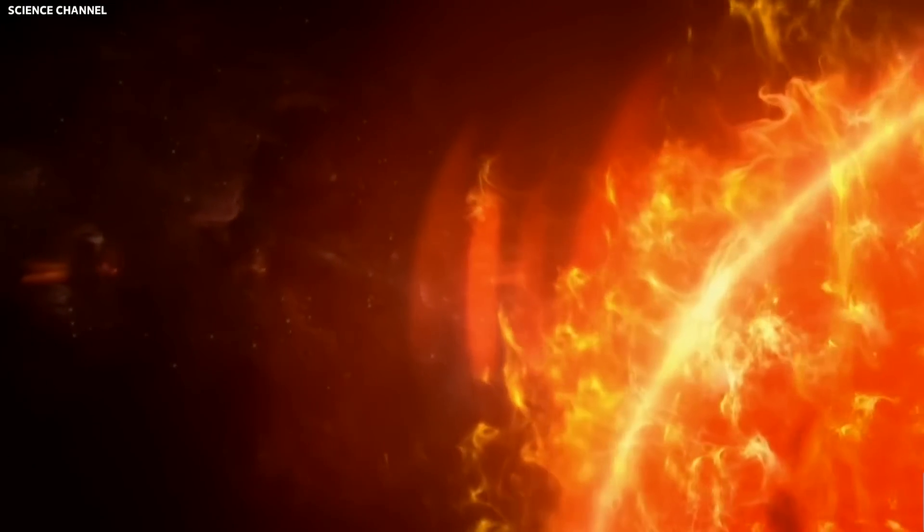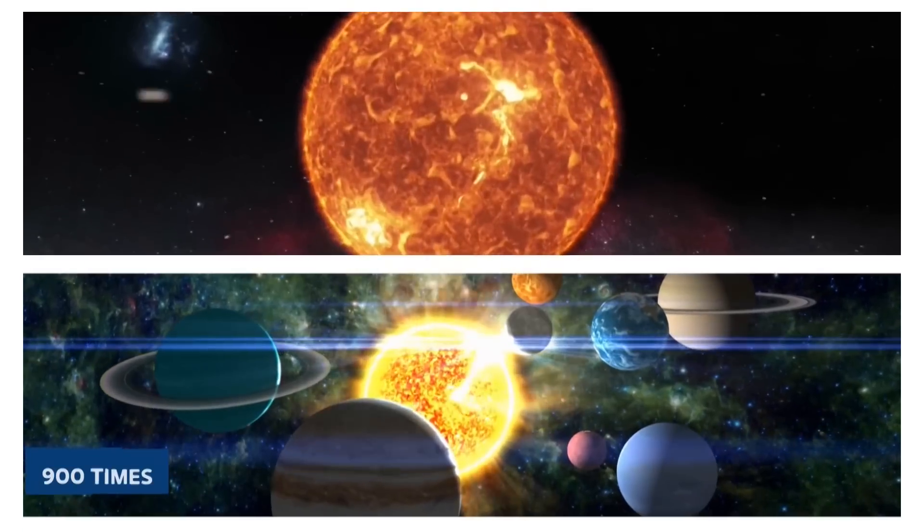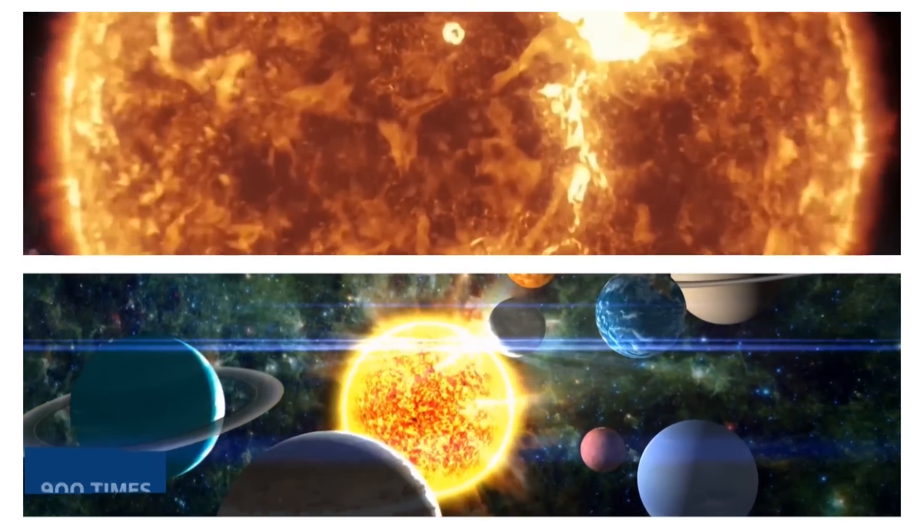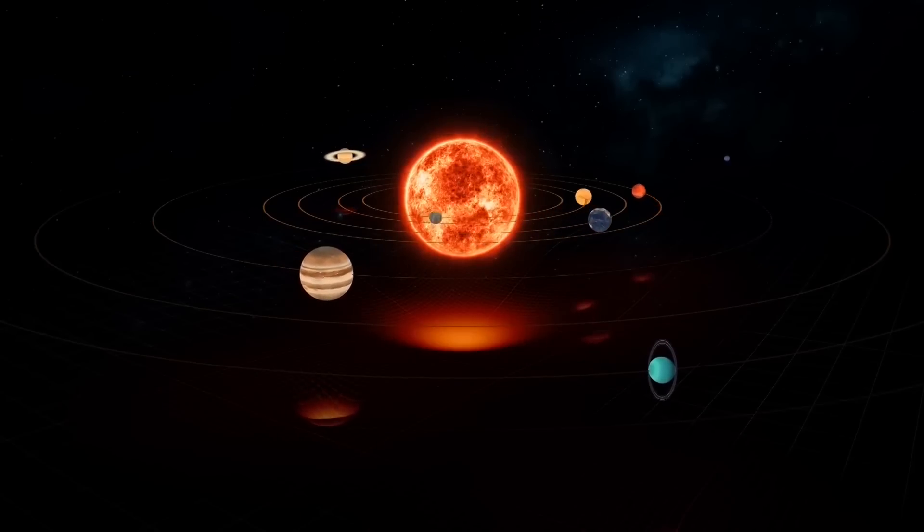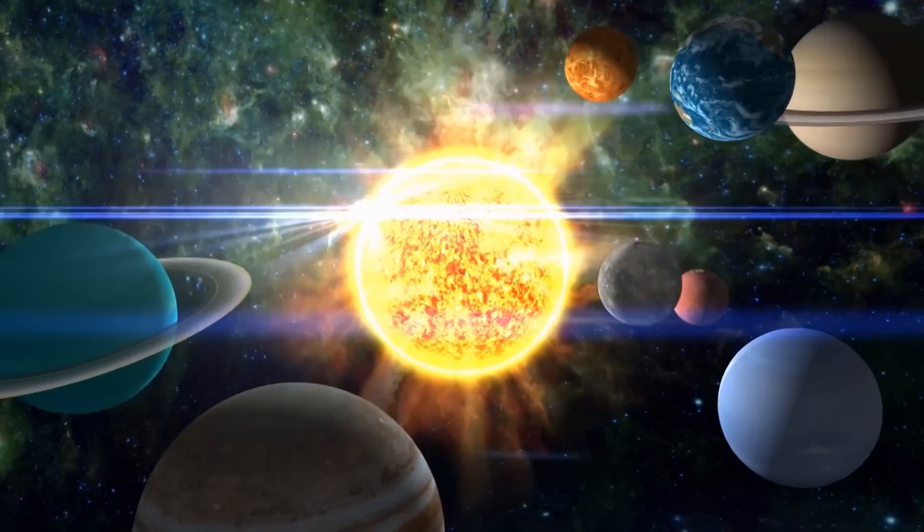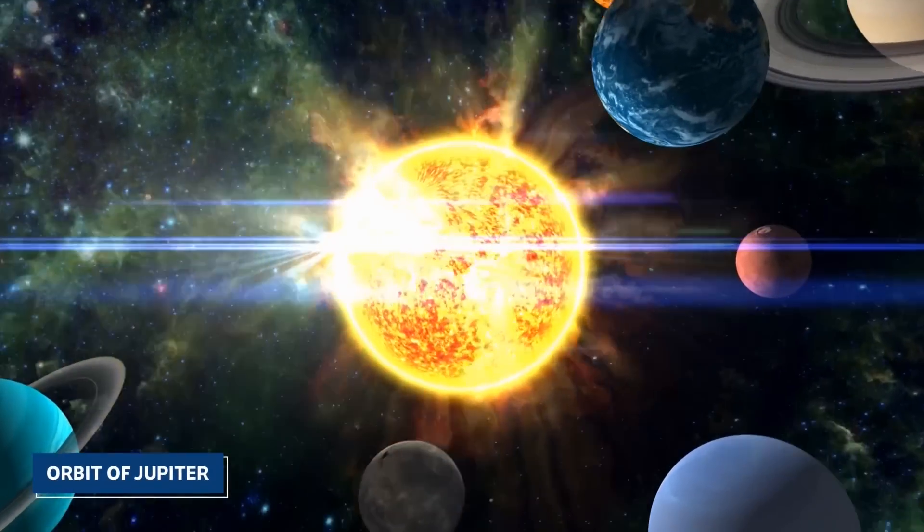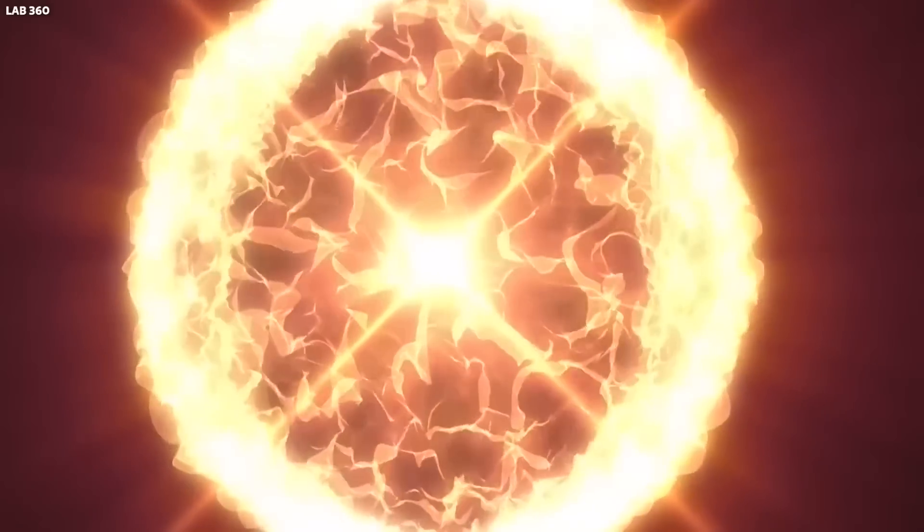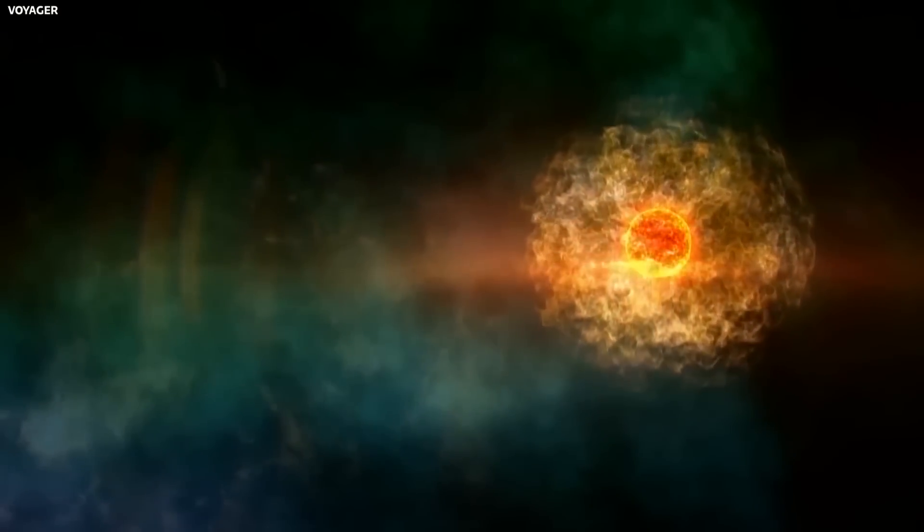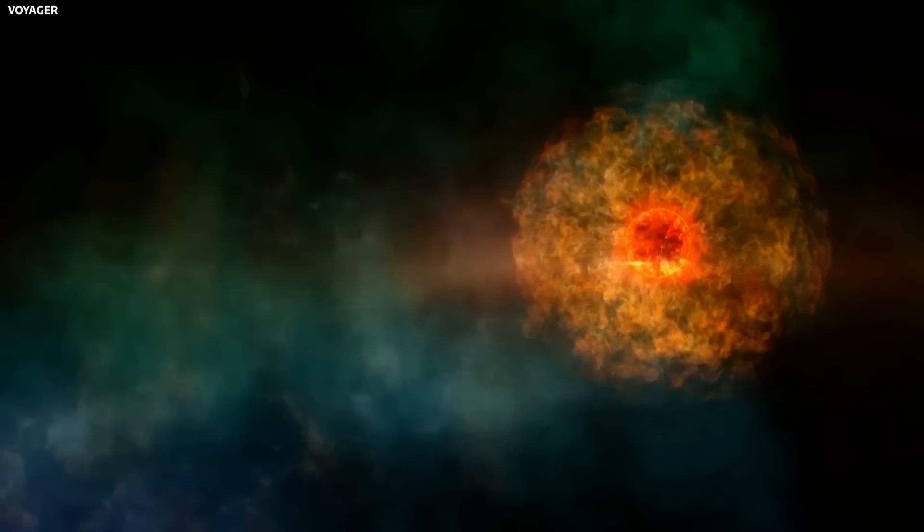Betelgeuse is not just any star, it's a behemoth. Its diameter is about 900 times that of our Sun. And if placed at the center of our solar system, its outer surface would extend beyond the orbit of Jupiter. Such massive stars have short lifespans and their deaths are explosive, often resulting in supernovae.